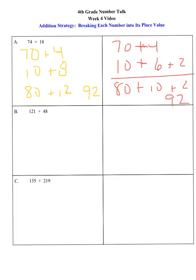121 would be broken down into 100 plus 20 plus 1, and we have 40 plus 8. So you'd have 100 plus 60 plus 9. So the answer would be 169. There's really not another way in terms of breaking each number into its place, there's not another way to solve B.